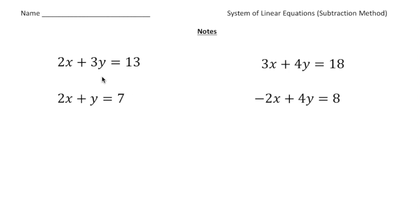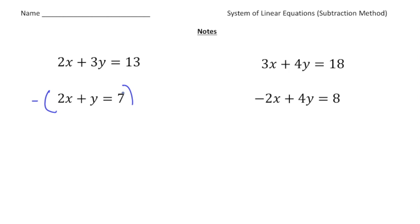Take a look at this first problem. We have 2x plus 3y equals 13, and 2x plus y equals 7. The key thing about using the subtraction method is to look for coefficients that are the same. Here, notice we have 2x and 2x — the coefficients are both 2. Anytime you have that, it's a really good chance to use the subtraction method. So we're going to subtract the second equation from the first.